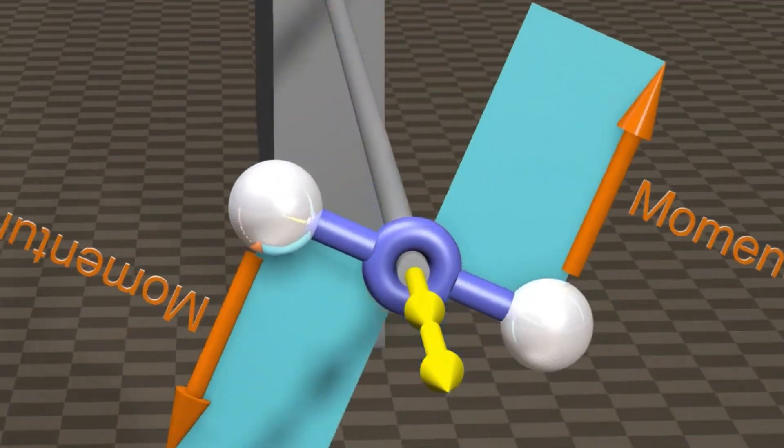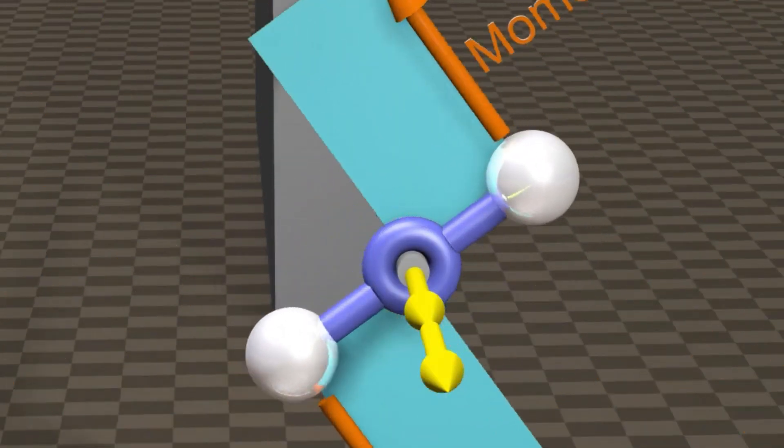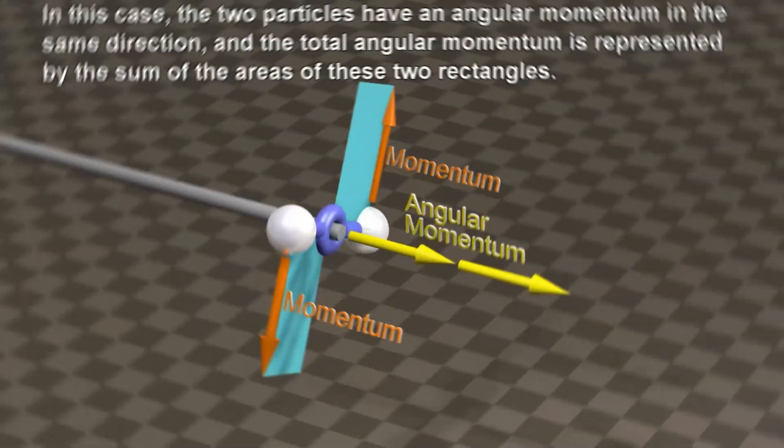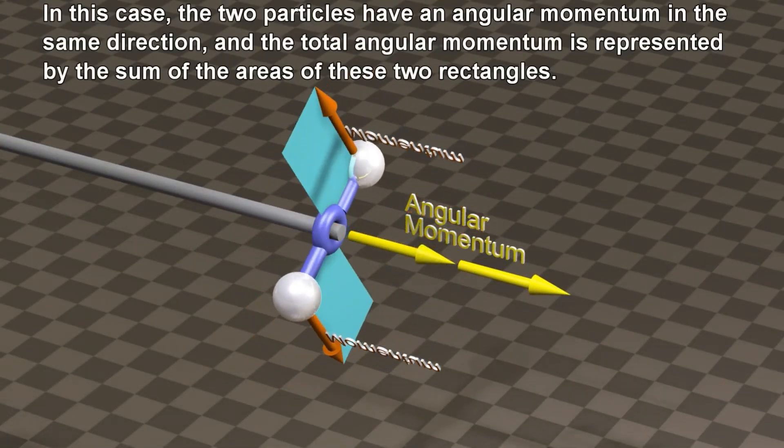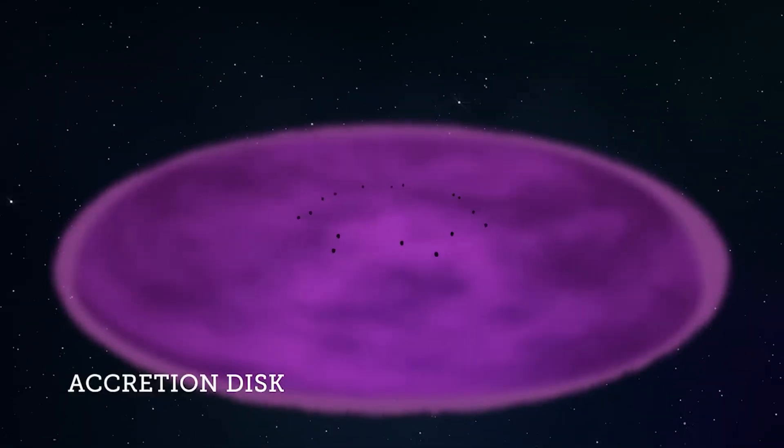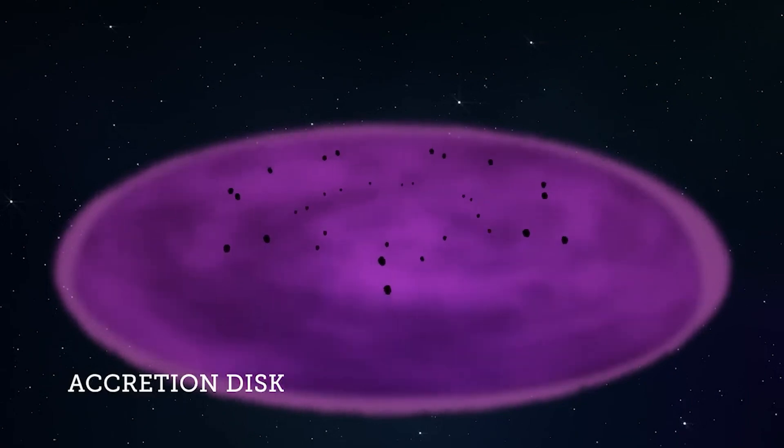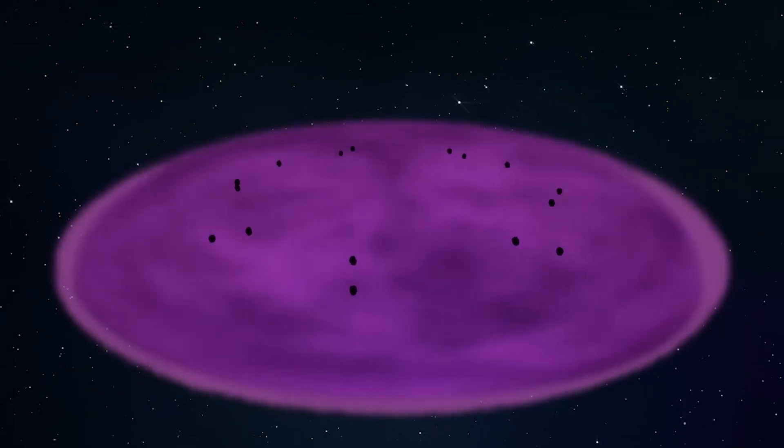To conserve angular momentum, everything within the disk must move in the same general direction, either clockwise or counterclockwise. Over time, this spinning motion causes the disk to settle into a stable flat structure where planets can form.